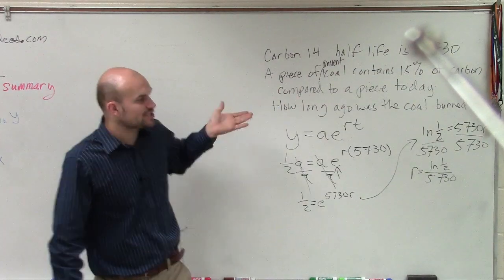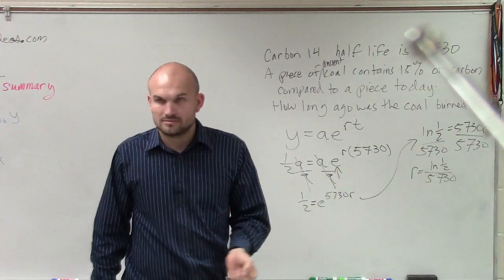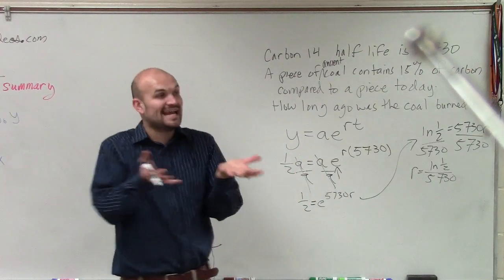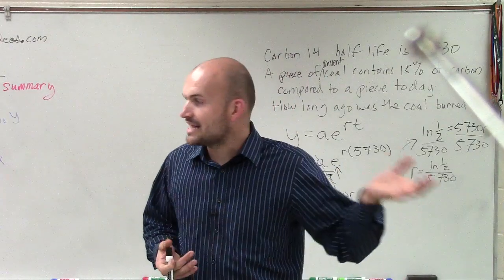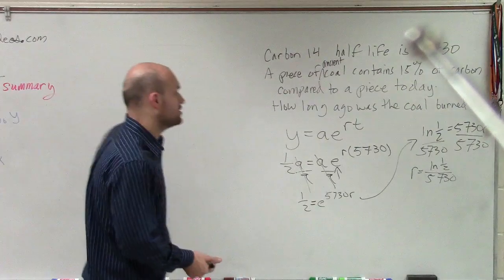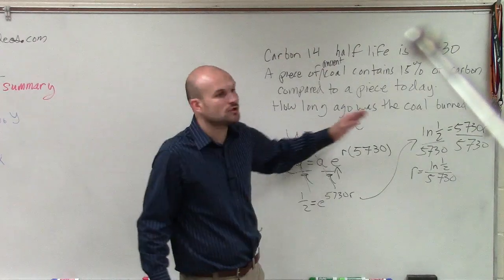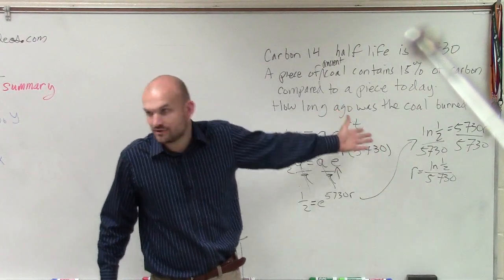Alright. So now, let's go back to the rest of the equation. It says a piece of ancient coal contains 15% carbon compared to a piece today. So therefore, they found an ancient piece of carbon, and that ancient piece of carbon only has 15% of the carbon compared to a piece of coal today. So how long ago was that coal burned? So when it says how long ago, that means we're trying to solve for what variable? T, right? For time.